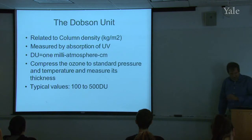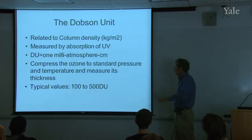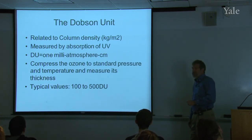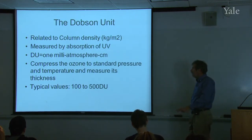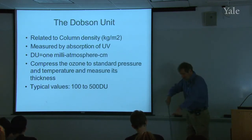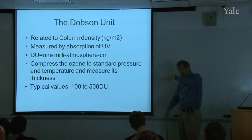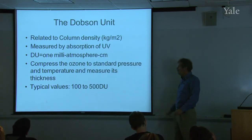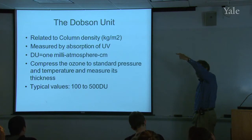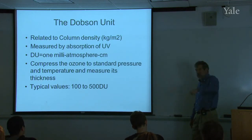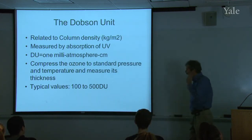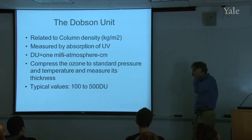The Dobson unit is a column density. I wish they had chosen units of kilograms per square meter — you'd simply integrate top to bottom and say how many kilograms of ozone are in each square meter of footprint. But for historic reasons, they didn't do it that way. This is typically measured by looking at how much ultraviolet light from the sun reaches the surface, which tells you how much ozone is in the column. The Dobson unit is defined as one milli-atmosphere centimeter.